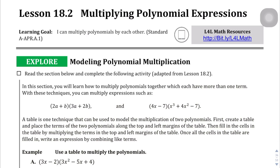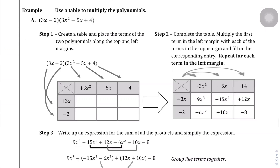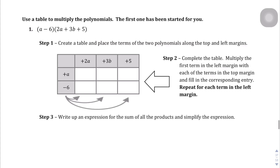We are on page 36 for lesson 18.2, and we're going to be multiplying polynomials. In the previous video we were multiplying monomials, but now we're multiplying polynomials. We're going to use tables to multiply these polynomials. I think using a table is far superior to the FOIL method you might be familiar with from previous math classes. Also, later on in credit 3 and credit 4, when you're factoring quadratics, being able to multiply polynomials and go backwards using a table makes it much, much easier in the long run.